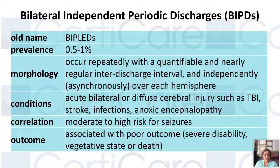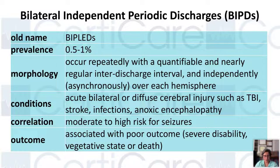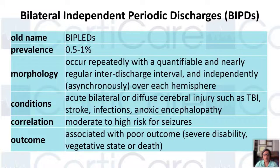Bilateral independent periodic discharges are also very rarely seen, but they are right behind LPDs in the damage they can cause. They occur independently on both hemispheres asynchronously, and are due to diffuse cerebral injury. They carry moderate to high risk — almost 80% of patients with BIPDs are going to have seizures — and are associated with poor outcomes. As a monitor, if you see BIPDs, there is a high chance the patient is going to seize.